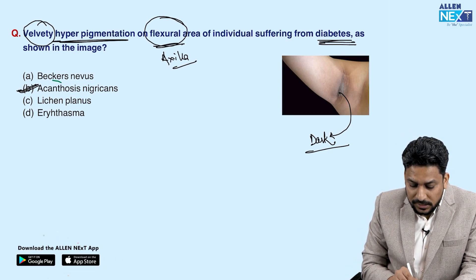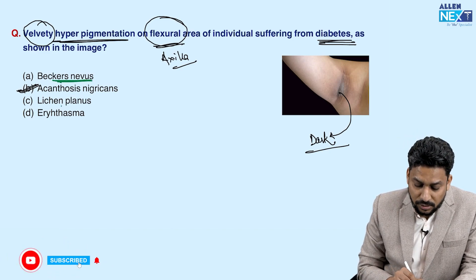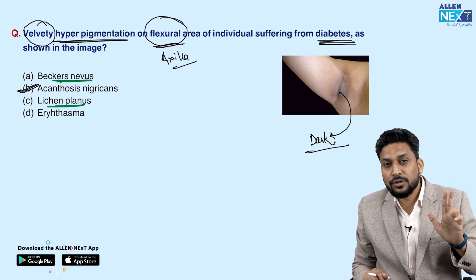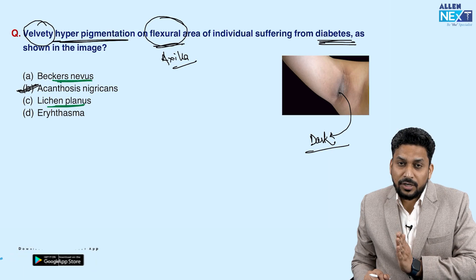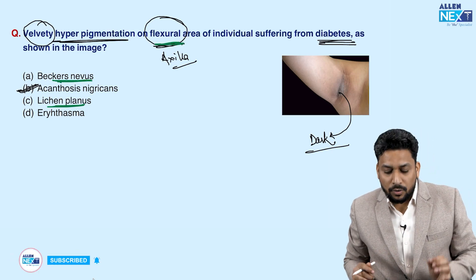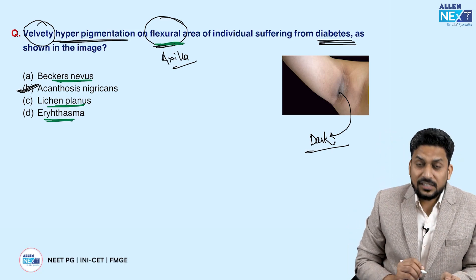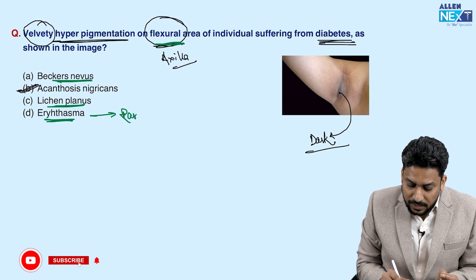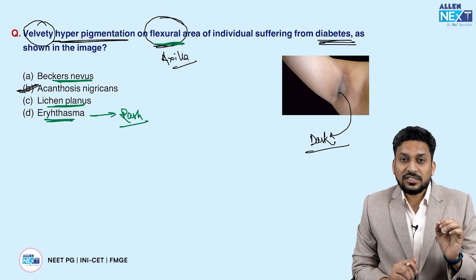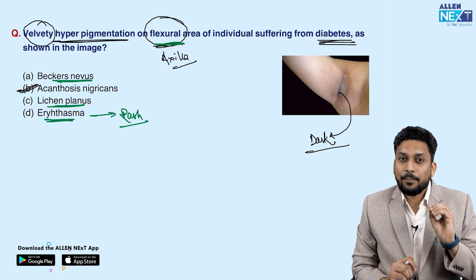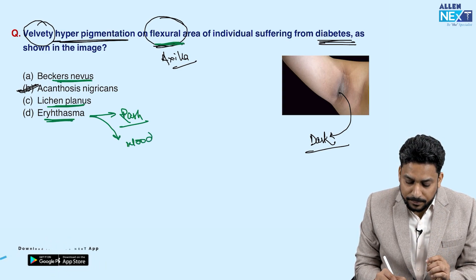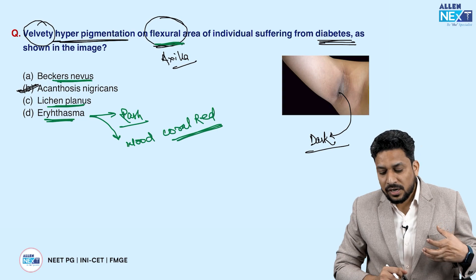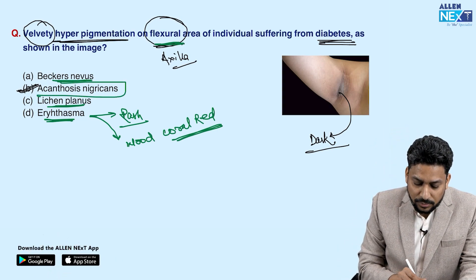This is not Becker's nevus because Becker's nevus has hypertrichosis — that is thick hair follicles. This is not lichen planus because lichen planus initially has lesions with the five Ps: plain, purple, polygonal, pruritic papules. There is also lichen planus pigmentosus, but it is not necessarily restricted to flexural areas. This is not erythrasma either, because erythrasma is a bacterial infection presenting with a rash, and characteristically on Wood's lamp examination, coral-red colored fluorescence is seen. Here there is hyperpigmentation, not a rash. So the answer is acanthosis nigricans.